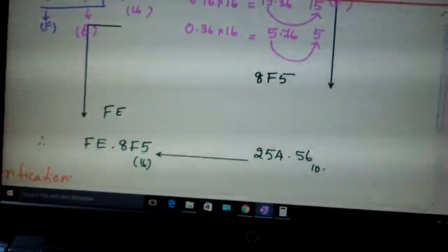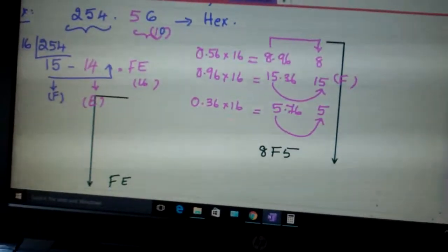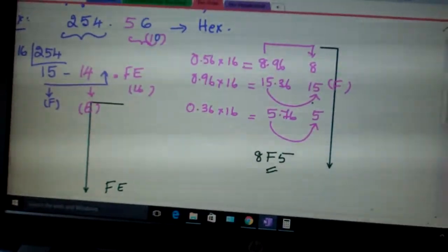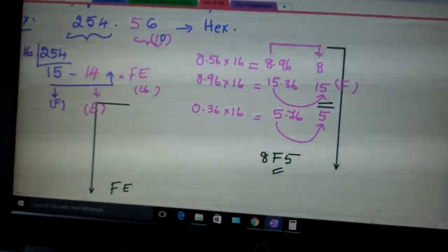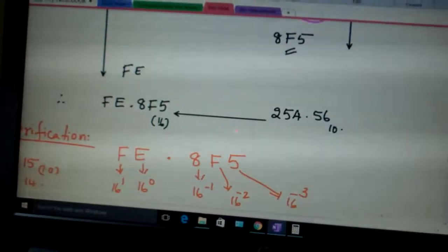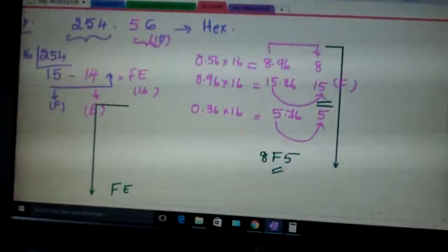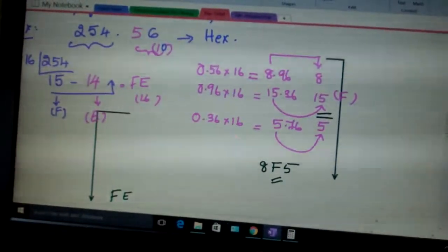What you get is this. Now why am I writing F here? Because 15 is F. Therefore you get this number. Write them together. You get it as FE.8F5.